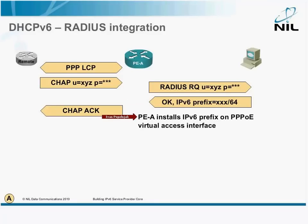The PE installs the IPv6 prefix on the Virtual Access Interface. If the remote end is a host, we are done — the host is connected, we are in business.